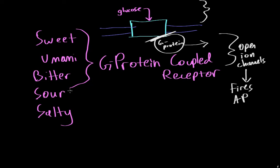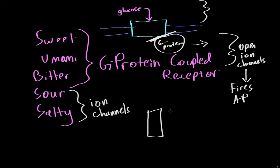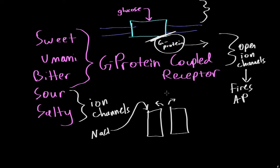Sour and salty taste cells, on the other hand, rely on ion channels rather than G-protein-coupled receptors. In the case of salty, a molecule of NaCl comes in and binds to an ion channel receptor, causing it to open up and allow positive ions outside the cell to flow in. When positive ions flow inside the cell, it causes depolarization and an action potential that travels to the brain.